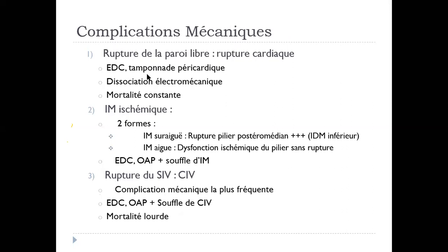Les complications mécaniques : la rupture libre de la paroi du VG, c'est un tableau d'état de choc tamponnade péricardique, dissociation électromécanique et la mortalité est quasi constante. L'IM ischémique : deux formes, l'IM sur-aiguë par rupture du pilier postéro-médian lors d'un EDM inférieur ; l'IM aiguë c'est la dysfonction ischémique du pilier sans rupture. Généralement c'est un tableau d'état de choc avec OAP et un souffle d'IM. La CIV : état de choc plus OAP plus souffle de CIV. La mortalité est très élevée.